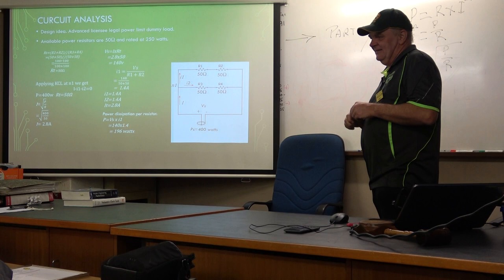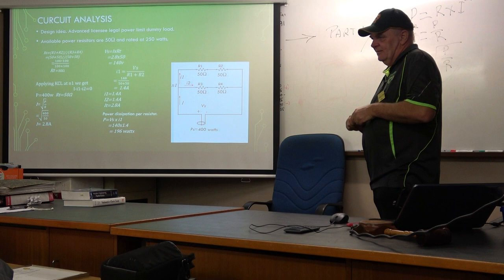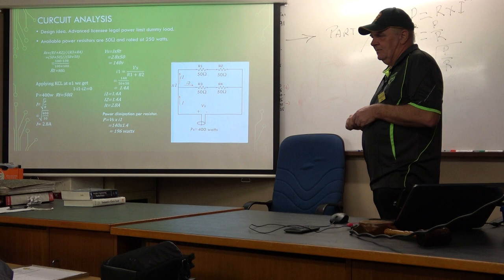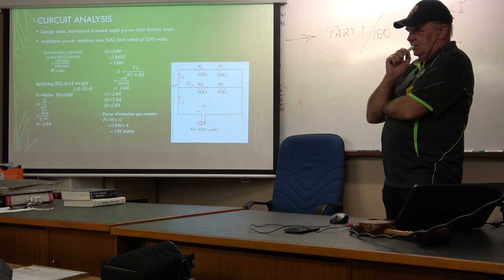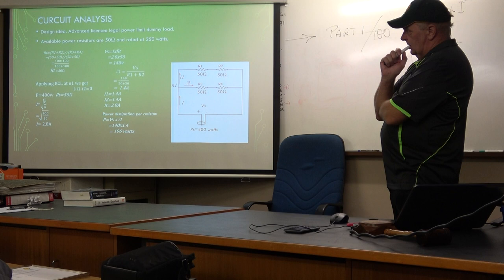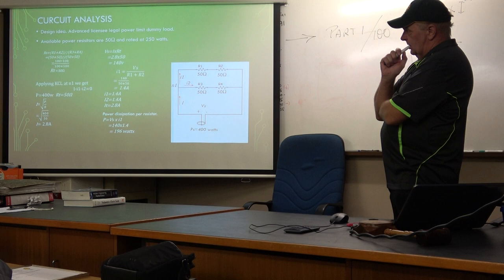An audience member goes back to the LED discussion from the beginning of the lecture, noting that an LED has two voltage parameters: the forward conduction voltage (around 0.65 V) and the reverse voltage (which for that particular LED was 3 V). They suggest it is the reverse voltage that causes the LED to emit photons. The presenter responds: you're getting into the actual workings of the diode.